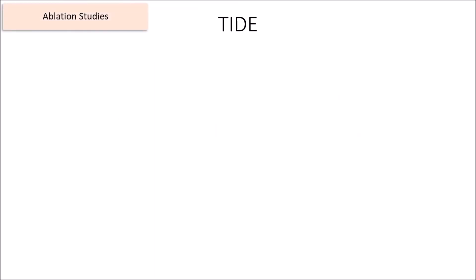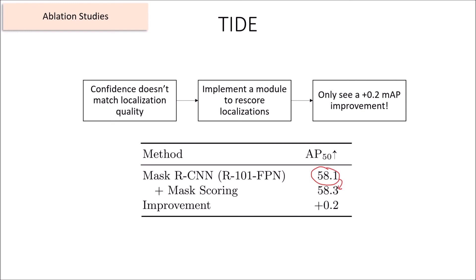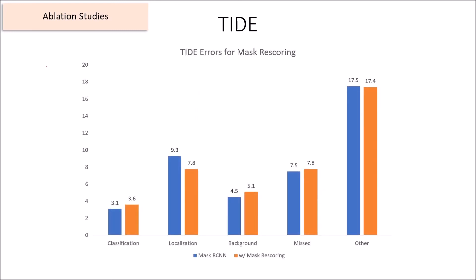Finally, the TIDE metrics can be used to explain MAP changes in ablation studies. Let's say we found that our model's confidence wasn't calibrated well with the quality of its localizations, so we wanted to add a branch that rescores the localizations based on quality. We've implemented the module, but our MAP only increases from 58.1 to 58.3. Did our module do anything significant? If we take a look at the TIDE error distribution before and after the model, instead of just MAP, we can see that the localization error went down significantly as we had hoped. But all these other error types went up, which balanced out the MAP in the end. Without this extra justification from TIDE, we wouldn't have known that our method actually worked, and since TIDE can be compactly represented as just a bunch of numbers, this kind of analysis fits neatly into ablation tables.